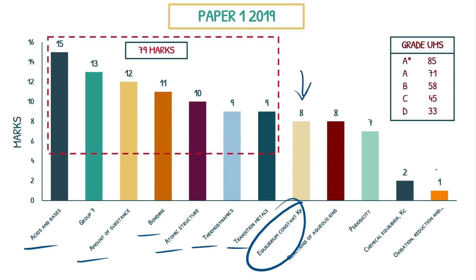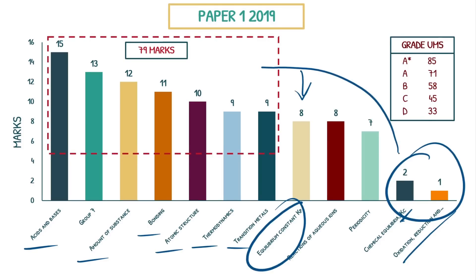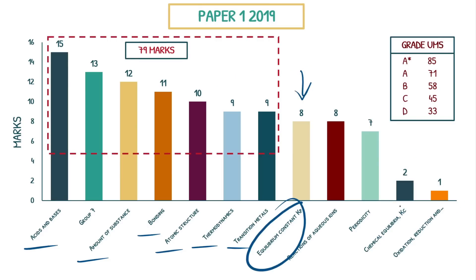Another caveat to mention: you see some topics with only one or two marks — like how does Kc only have two marks, or oxidation/reduction only one mark? That's because of synoptic knowledge. AQA teaches oxidation and reduction and chemical equilibria Kc in year one as AS content, and then applies that to more difficult topics. So although Kc is only two marks here, content from Kc appears in Kp. Things like equilibrium, Le Chatelier's principle, redox, oxidation, and reduction are fundamental principles applied across multiple topics.